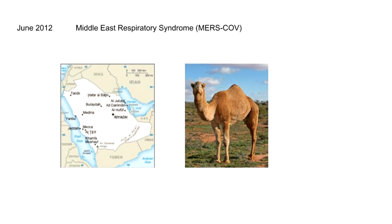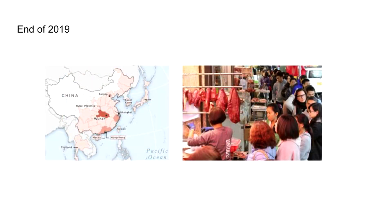Jumping forward to June of 2012, a man was admitted to a hospital in Saudi Arabia in severe respiratory distress, diagnosed with pneumonia and also having acute kidney injury. He died and a sputum sample was identified as a coronavirus — Middle East Respiratory Syndrome. A second person died with exact same symptoms, which prompted investigation. There were 2,374 cases identified and 812 deaths from respiratory symptoms. The animal reservoir was felt to be the camel.